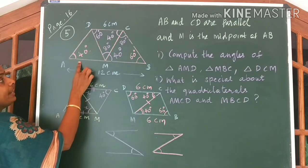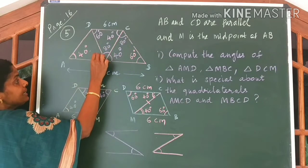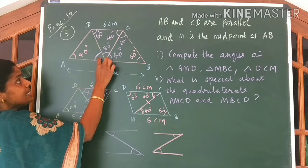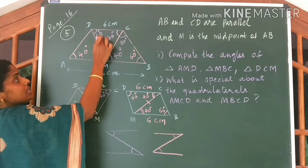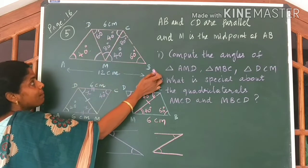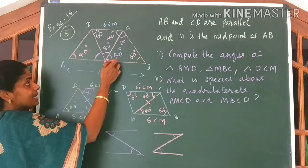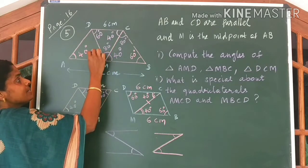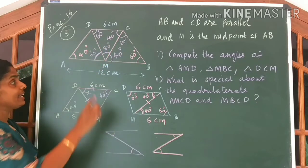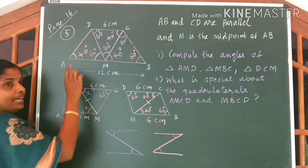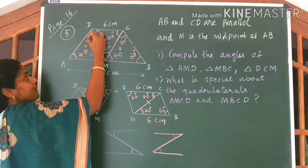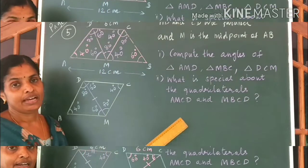Come to this figure. We know this angle; this angle we have to find out. This angle will be equal to 60 degrees, because these two lines are parallel, cut by a transversal. So alternate angles are equal. Therefore this angle is equal to 60 degrees. 60 plus 40 is 100. Therefore the remaining angle is equal to 80 degrees.